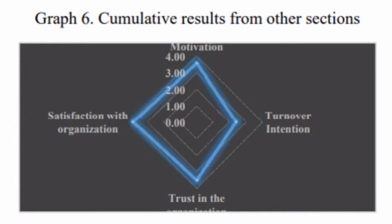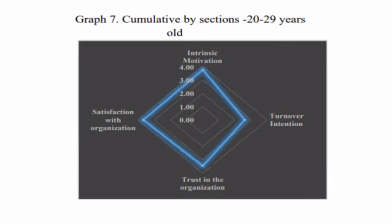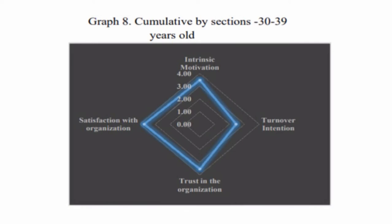As you can see, it has four corners: intrinsic motivation, turnover intention, trust in the organization, and satisfaction with the organization. It has four layers of diamonds — the smallest one is 0.00, the second one is 1.00, the third one is 2.00, and the fourth one is 3.00. I'm not going to explain each layer in detail here because this will be explained in the discussion section, so let's jump to the discussion.